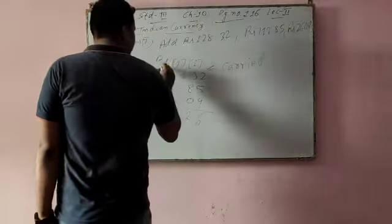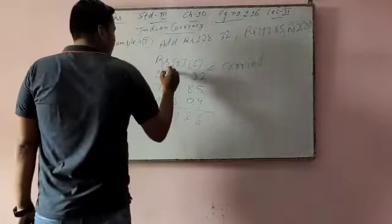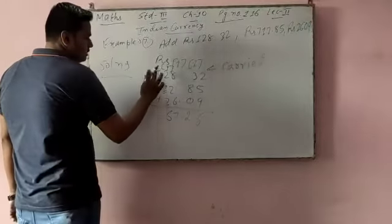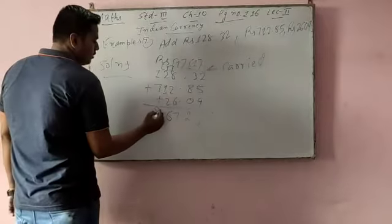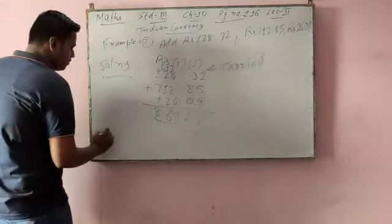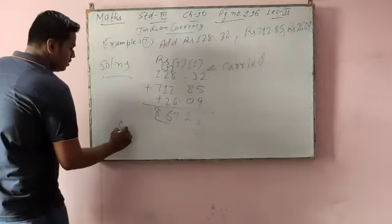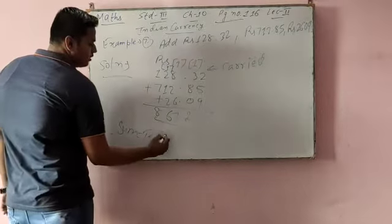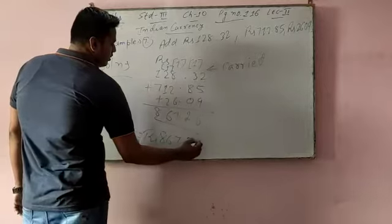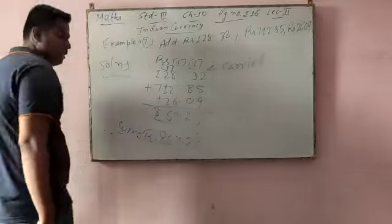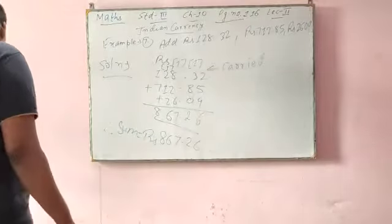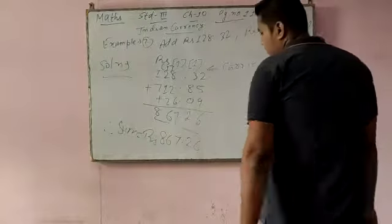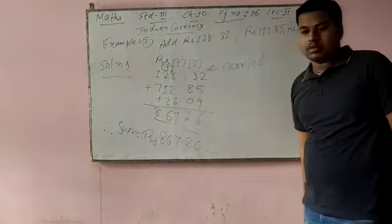Again one carry will come here. 2 plus 1 is 3, 3 plus 1 is 4, 4 plus 2 is 6. And 7 plus 1 is 8. So therefore, the sum is equal to Rs. 867.26. Sum will be Rs. 867.26.